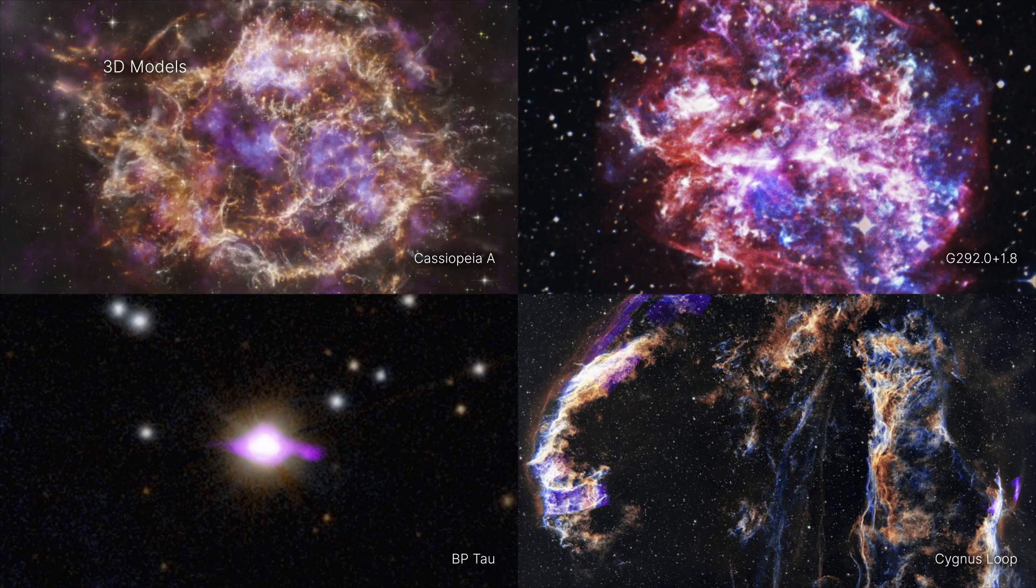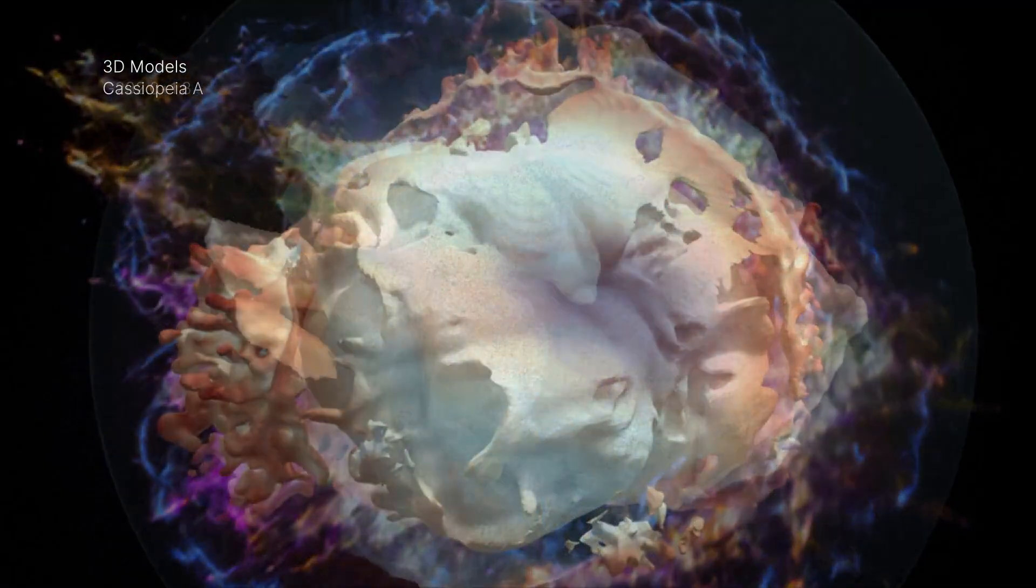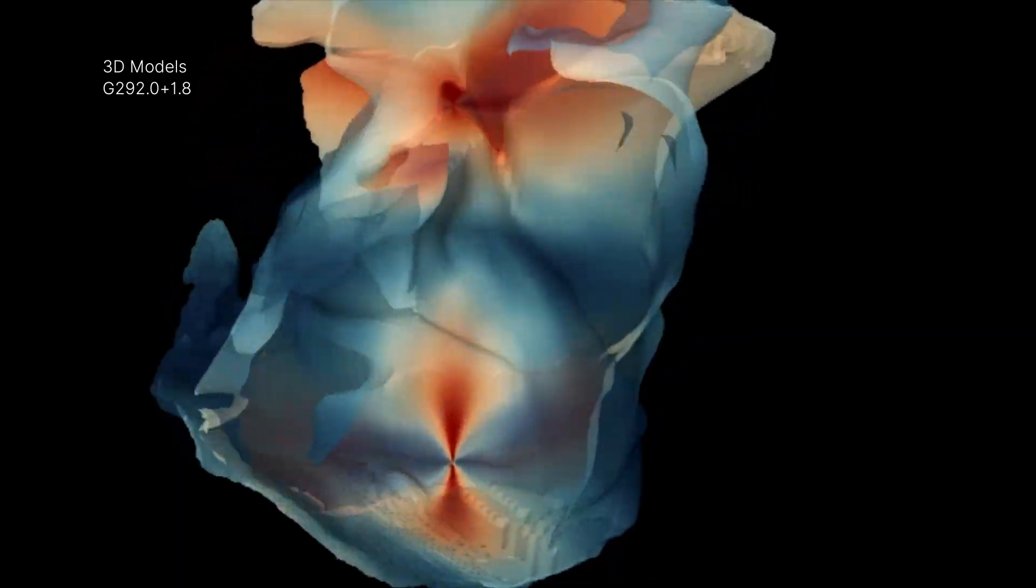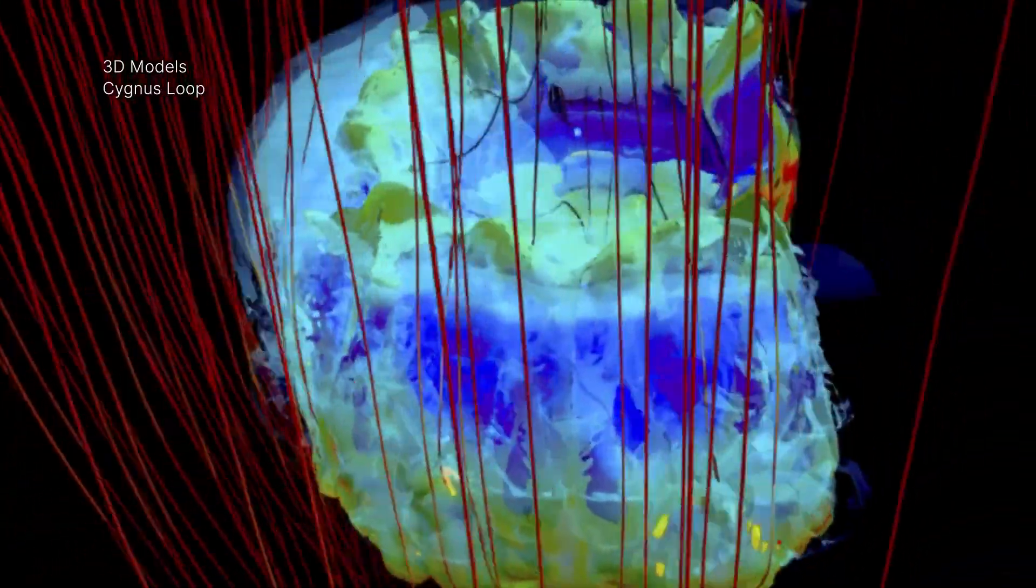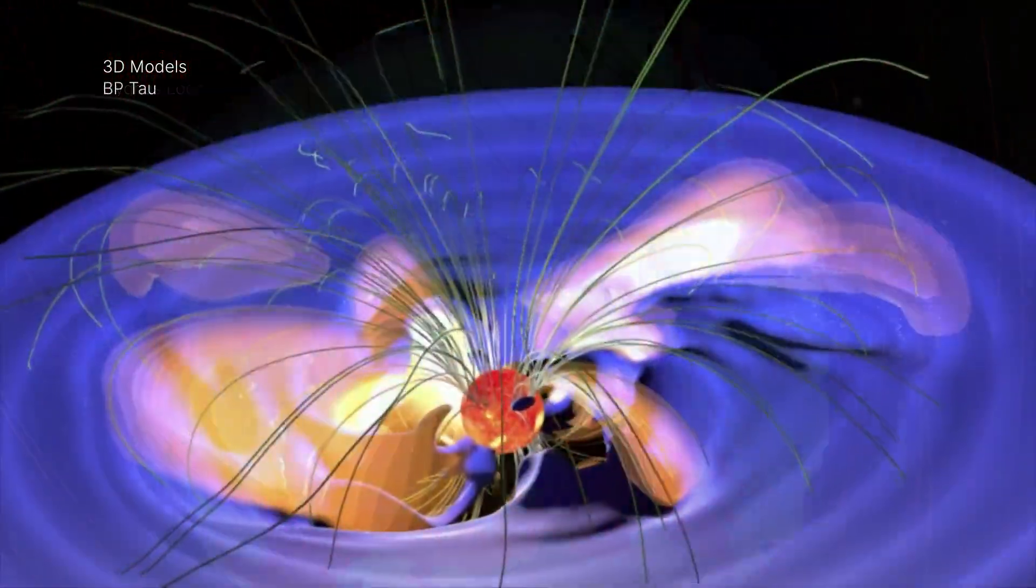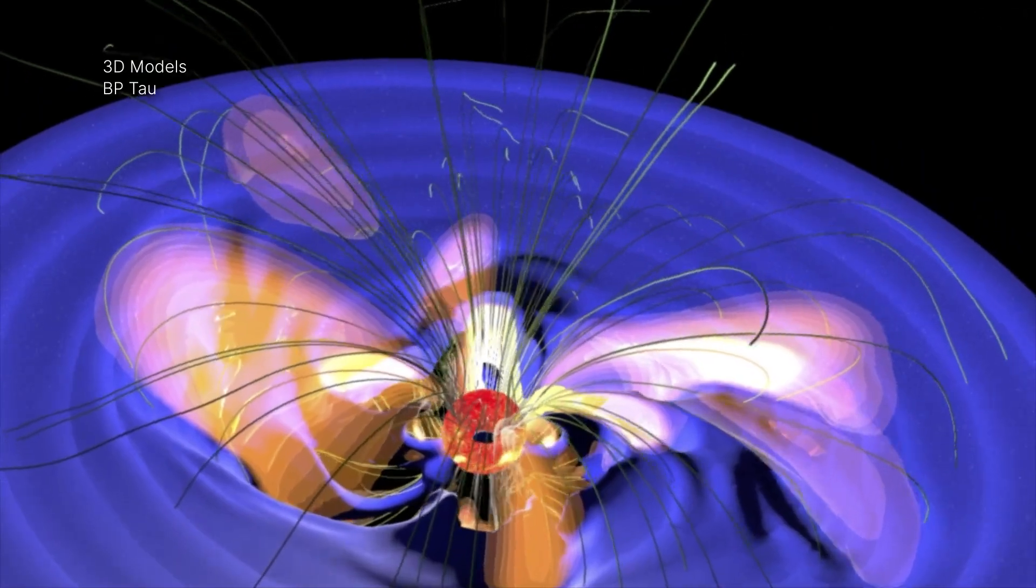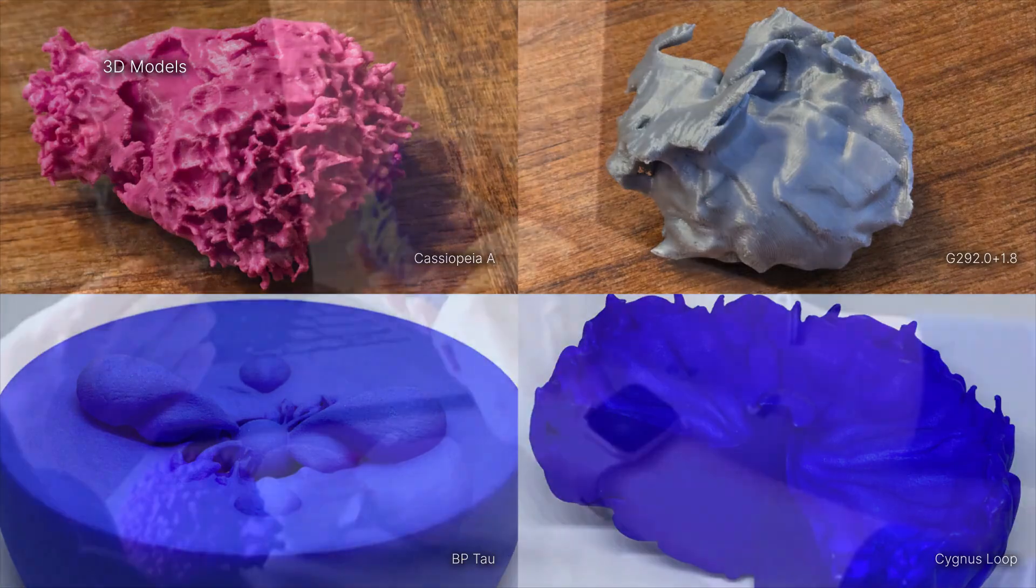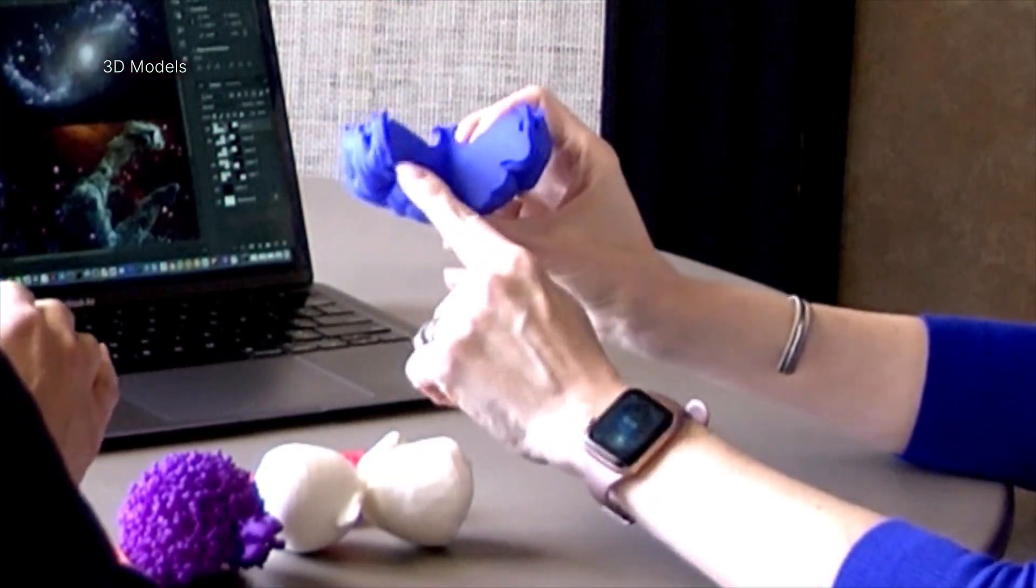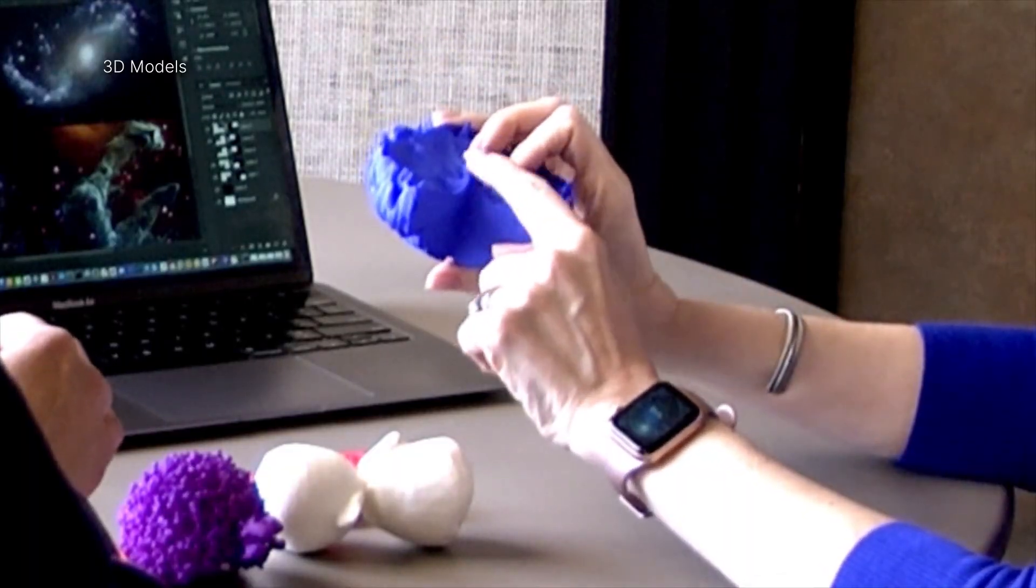However, looking at images and animations is not the only way to experience these data. The four new 3D printable models of Cassiopeia A, G292.0 plus 1.8, and Cygnus-loop supernova remnants, and the star known as BP Tau, let us experience the celestial objects in the form of physical structures that will allow anyone to hold replicas of these stars and their surroundings and examine them from all angles.